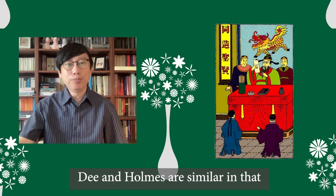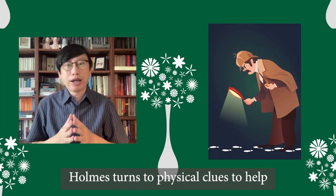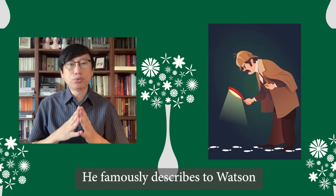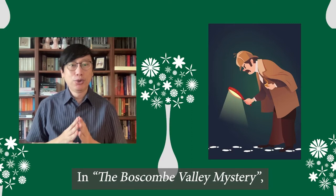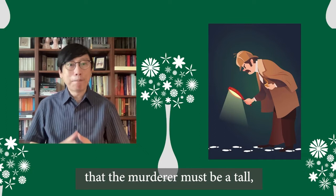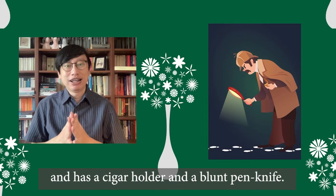Dee and Holmes are similar in that both possess extraordinary skill in deduction. Holmes turns to physical clues to help construct a sense of the truth. He famously describes to Watson the difference between them: 'You see, but you do not observe.' In the Boscombe Valley Mystery, Holmes is able to conclude from mere footprints that the murderer must be a tall left-handed man with a lame right limb, a grey cloak, and shooting boots, who smokes Indian cigars and had a cigar holder and a blunt penknife.